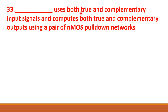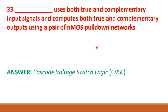Dash uses both true and complementary input signals and computes both true and complementary outputs using a pair of NMOS pull-down networks. The answer is CVSL, that is, cascode voltage switch logic.